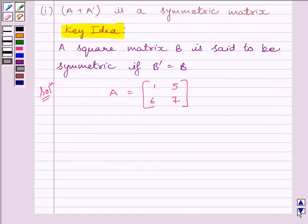Now we will find out A transpose by interchanging rows and columns of A. So we get 1, 6, 5, 7 as A transpose.